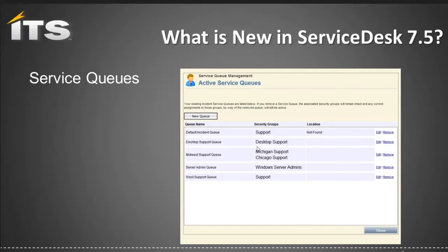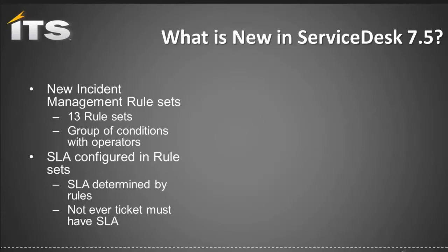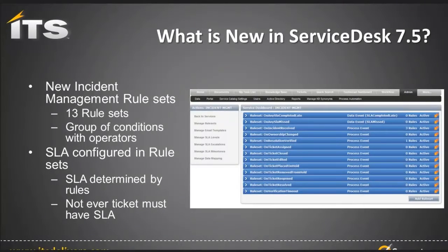A group can also be assigned to multiple queues. There are some added rules as part of the process automation — there are 13 different rule sets. You can group conditions with operators, so you can have multiple conditions to determine if it's going to perform the action. SLA rules can also be configured within the rule sets. Every ticket comes in with default SLAs, but those can be removed or set not to run on every ticket. Not every ticket must have an SLA — or the SLA can be extended based on information within the ticket like classification, location, business services, and other pieces, all within the rules of incident management.